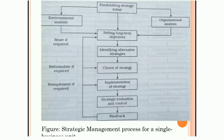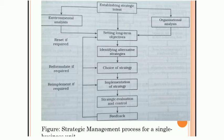This figure shows the strategic management process for a single business unit — such as Kodak India Limited or Gillette India Limited, who have only one business unit. The steps are: first, establishing strategic intent; then environmental analysis; then organizational analysis; then setting long-term objectives; then identifying alternative strategies.